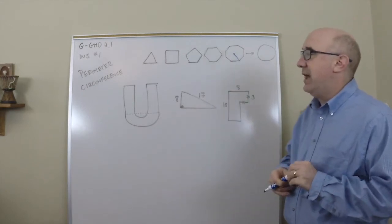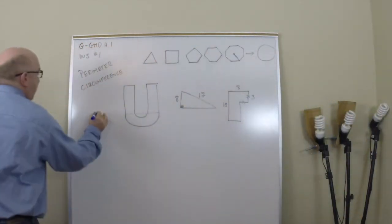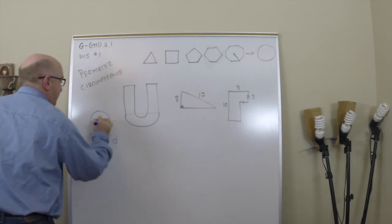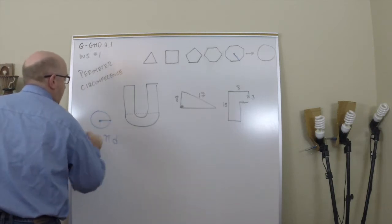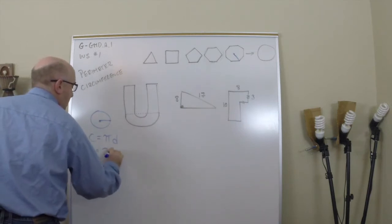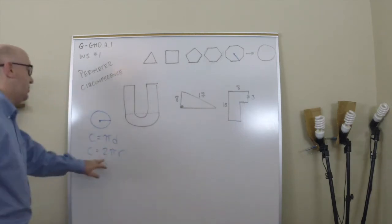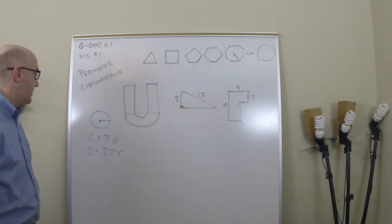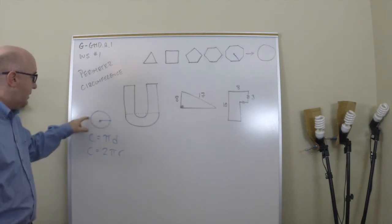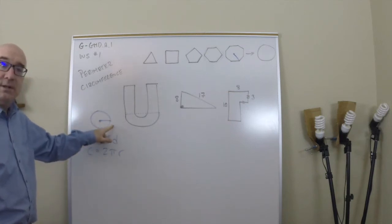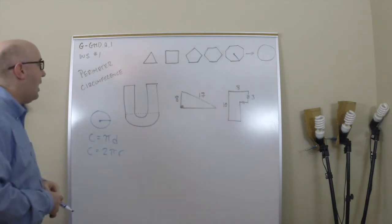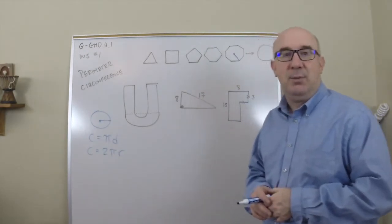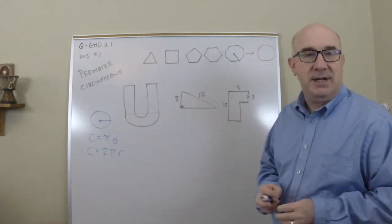We know that the circumference of a circle is π times d, or equivalently 2πr, because two radii make a diameter. These are interchangeable depending on what information you have, and this formula calculates the circumference, or the perimeter, of the circle.